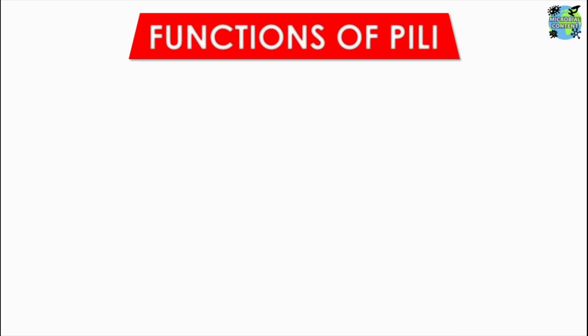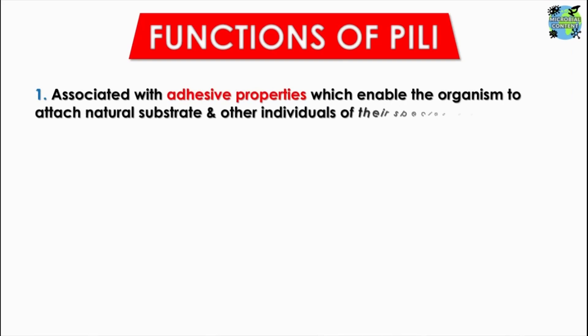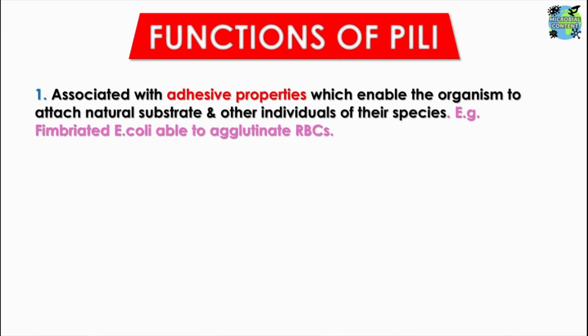Now we come to the various functions of the pili. The first and most important is their adhesive properties. Adhesiveness in bacteria is mainly due to the pili, which enables the organism to attach to natural substrates and other individuals of their species, adhering to smooth surfaces and contributing to virulence. For example, fimbriated E. coli are able to agglutinate red blood cells because they can attach to them and cause clumping.